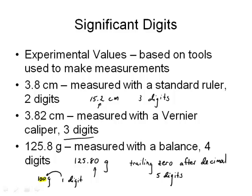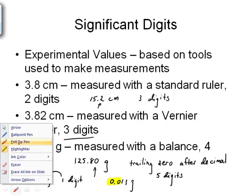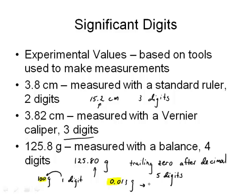Now, leading zeros are of a similar nature. So if I had, let's say a very small piece of ore, it might have 0.013 grams of mass. Now in this case, I have leading zeros, but these leading zeros are not digits. Only the one and the three are significant digits. And so this number has two significant digits. So zeros before the first non-zero number in a very small number like 0.013, those leading zeros are not significant.